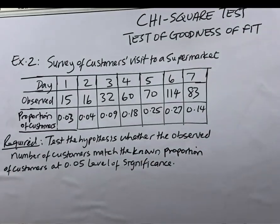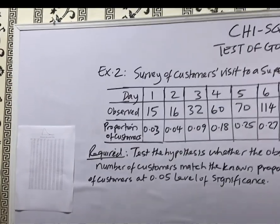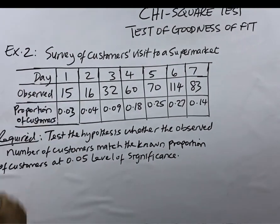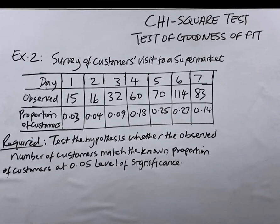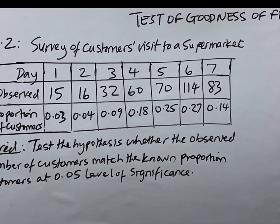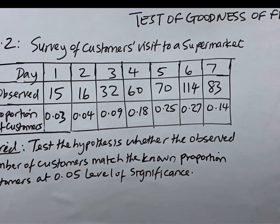Let's look at this example on our board. We have a survey of customers' visits to a supermarket. We're given the days — day one through seven for a week — and we have the observed number of customers visited within a period of time. Then we have the proportion of customers expected on each day of the week. The requirement is to test the hypothesis whether the observed number of customers match the proportional customers at a 0.05 level of significance.